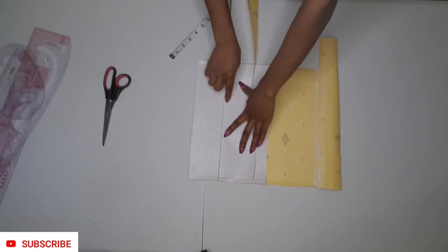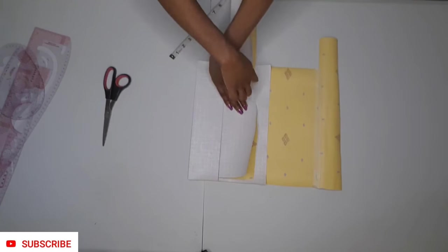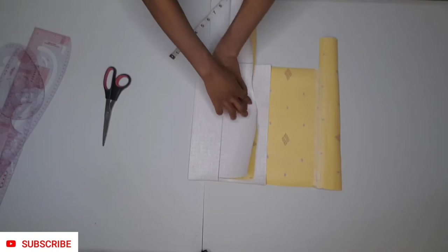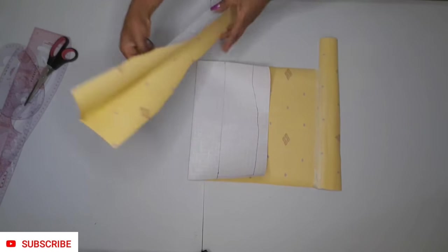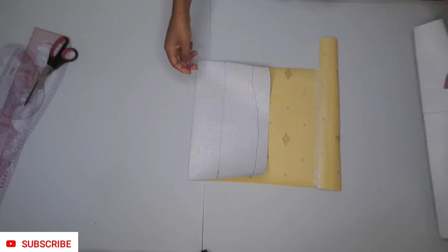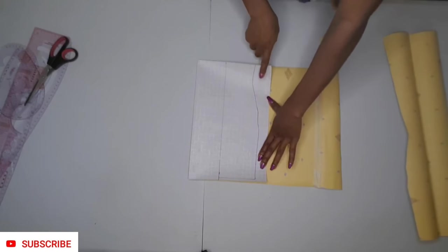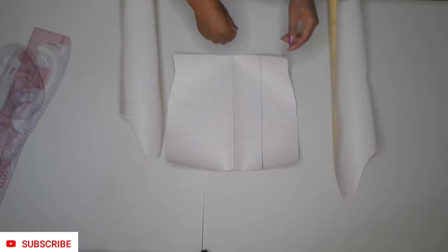Then trace out the shape of the dart side. I am done tracing out my dart and this is what it looks like. You can see the lines now.